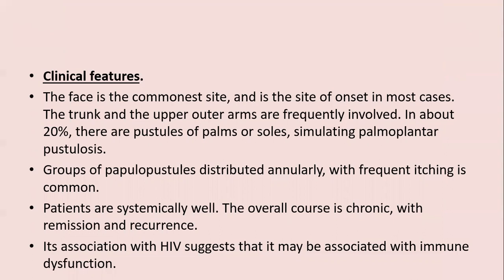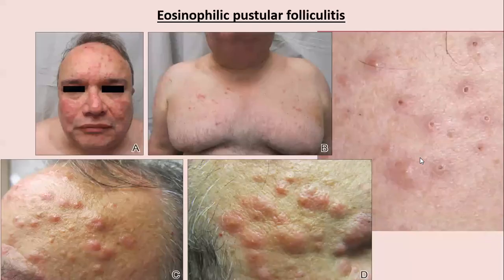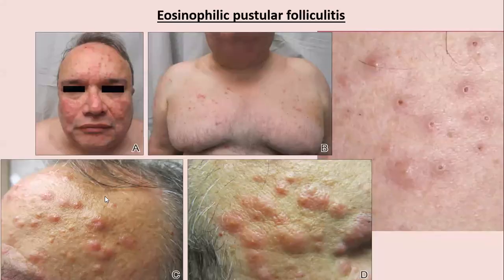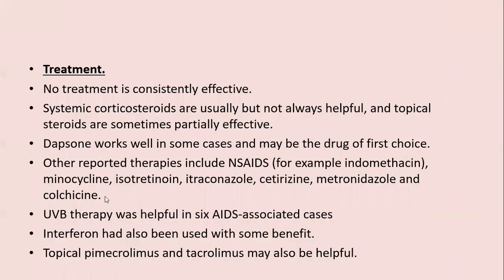In 20% of cases pustules of palm and sole simulate palmoplantar pustulosis. Papulopustules are distributed in an annular pattern with frequent itching; patients are systemically well. The overall course is chronic with remissions and recurrences; if associated with HIV it may be associated with other immune dysfunctions. No treatment is fully effective; systemic corticosteroids are usually but not always helpful; topical steroids are partially effective; dapsone works well in some cases. Other reported therapies include NSAIDs, minocycline, isotretinoin, itraconazole, cetirizine, metronidazole, colchicine, UVB, interferon, topical pimecrolimus, and tacrolimus.